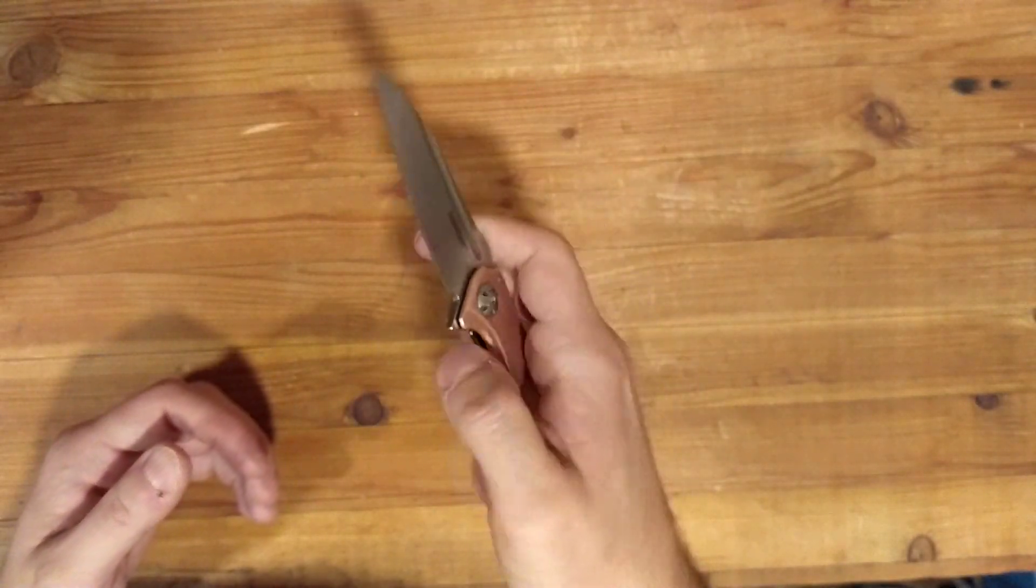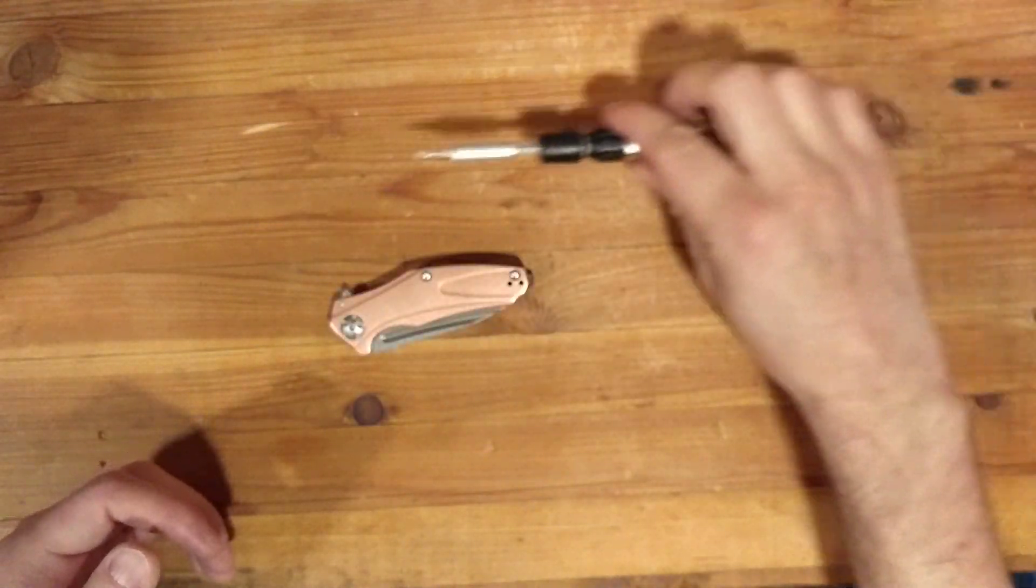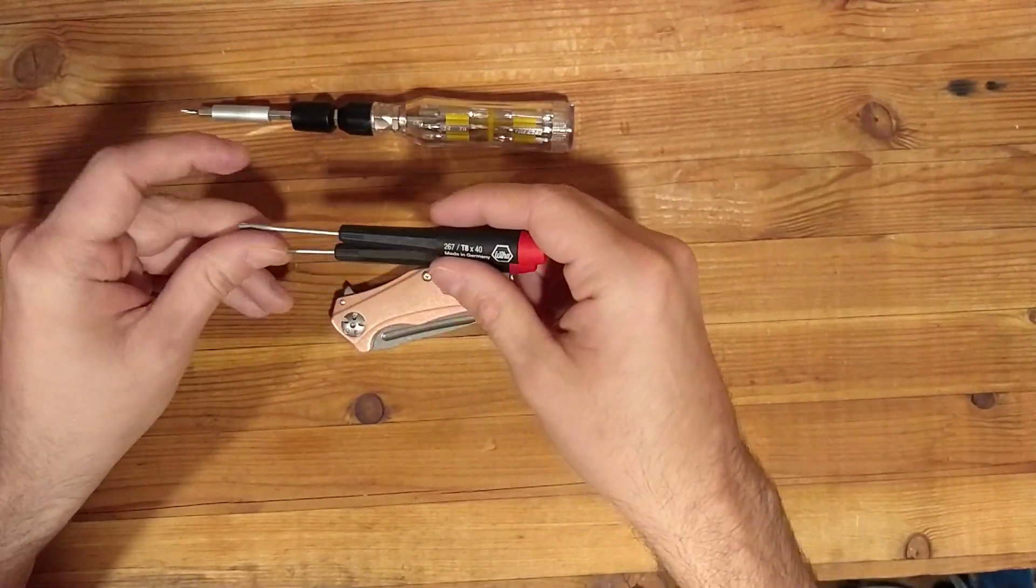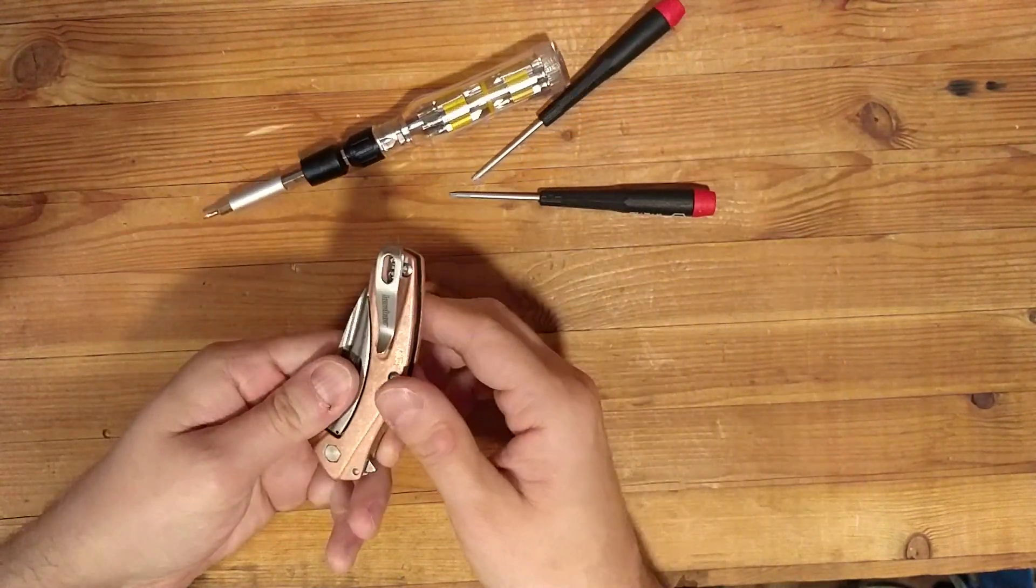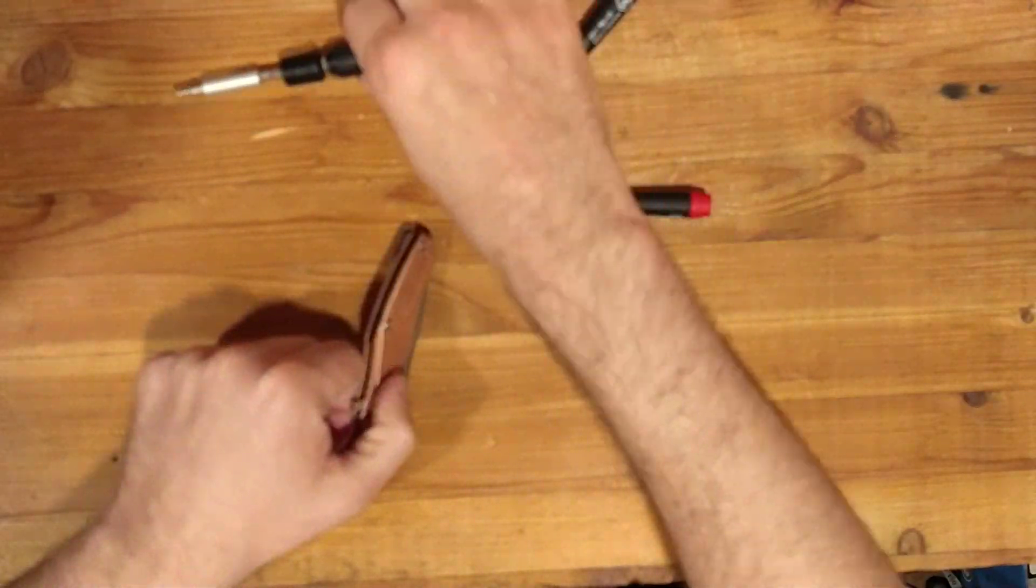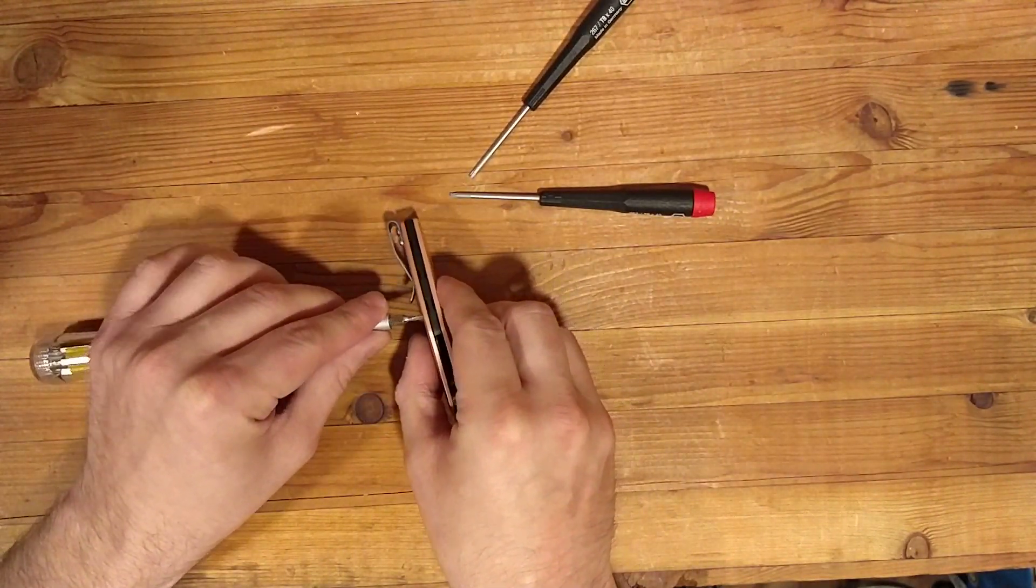So that's the knife and now let's start the disassembly. To take this guy down you're going to need three drivers. You need two T6 drivers and one T8. The reason why you need two T6 is I'm pretty sure these guys aren't keyed and you're going to need to hold one side and drive the opposite.